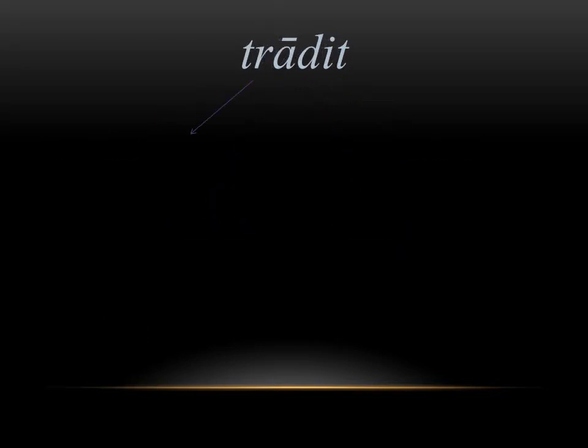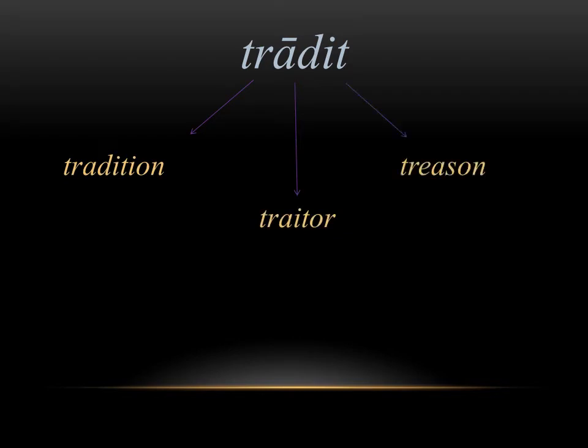Tradit means he or she hands over, and in English this leads to the words tradition, traitor, and treason. They all have to do with handing over something. A tradition is literally something that's passed down from generation to generation, and a traitor is someone who's gone against their country, probably by handing over some sort of secret.